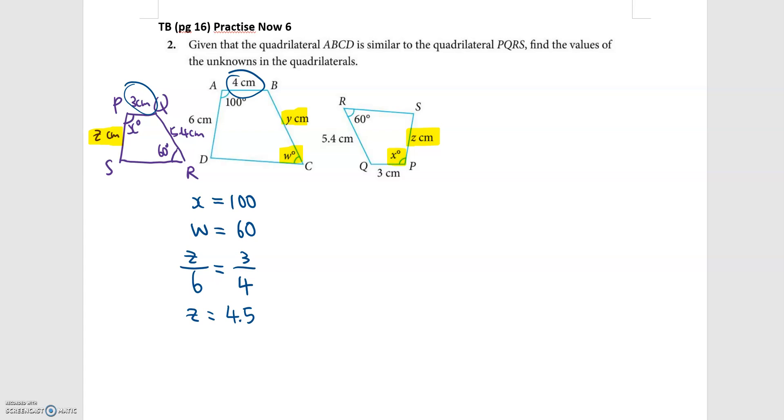Now then I will go on to find Y. So Y is on the larger quadrilateral, so Y over corresponding side 5.4 is now 4 over 3. So if I were to do my cross multiplication, it will be 4 over 3.